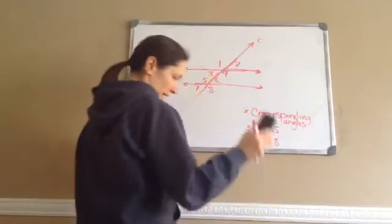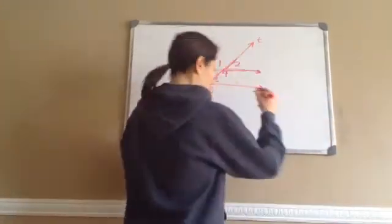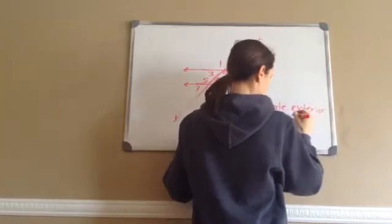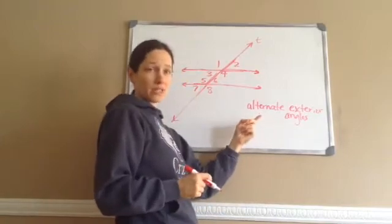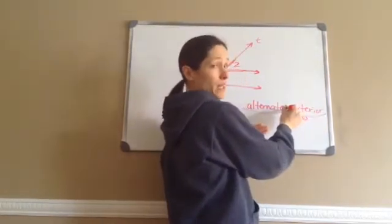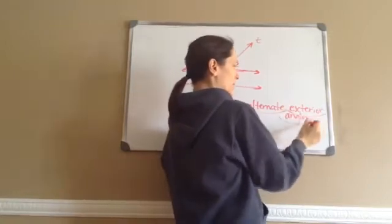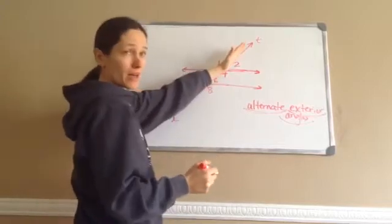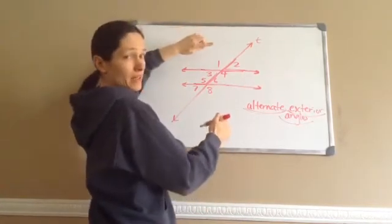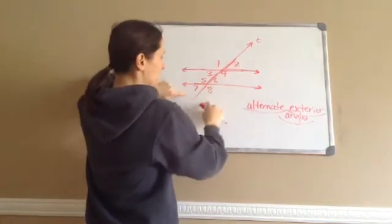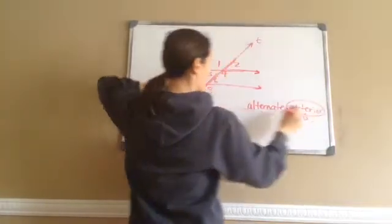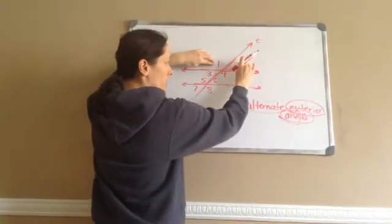Now the next thing I want to teach you about is alternate — write this one down too — alternate exterior angles. We're going to take this word and break it apart. Alternate means kind of like opposite. Exterior means outside. So if this is my intersecting line, which numbers are on the outside? Hopefully you can see 1 and 2 are on the outside and 7 and 8 are on the outside. These are on the inside. We determined that 1 and 2 are exterior angles and 7 and 8 are exterior angles.